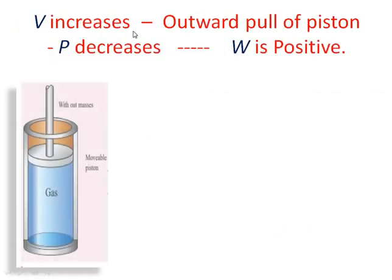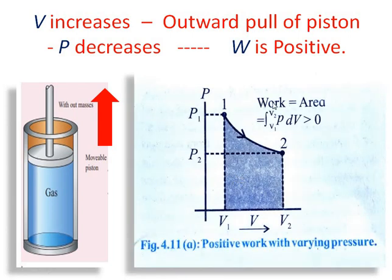There are certain cases. If volume increases — when the piston moves in the upward direction, the volume of the gas increases and the pressure decreases. In this case, the work done will be positive. Volume changes from V1 to V2 (V2 > V1) and pressure decreases from P1 to P2. When we integrate PdV from V1 to V2, we get a value greater than zero, giving us a positive area under the curve. Therefore, the work done is positive.